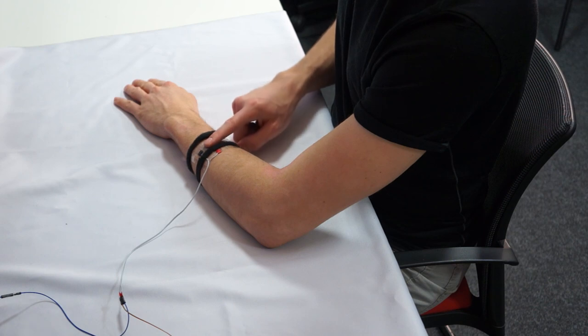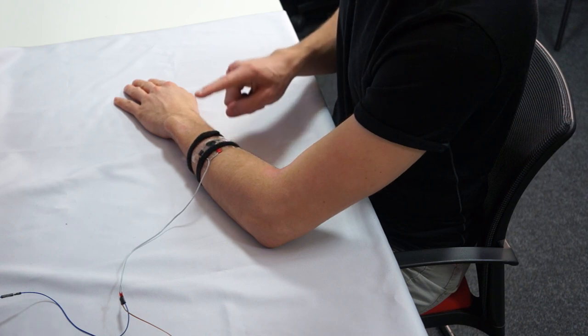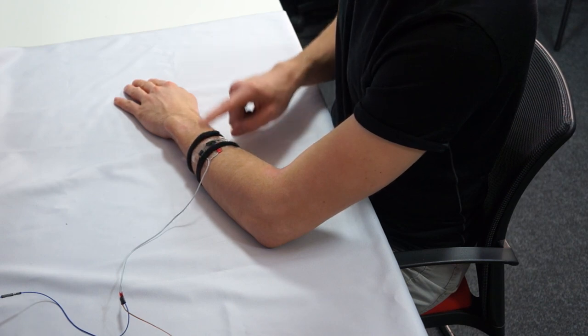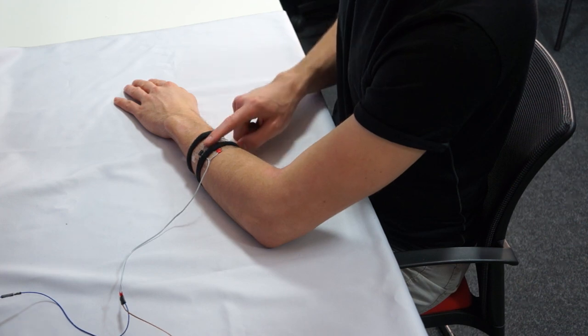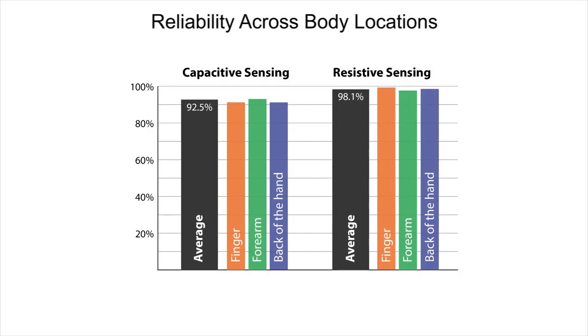In a user study, we investigate the accuracy and robustness of the touch sensor when worn on various body locations. Our findings show a high accuracy of over 92% for light touch contact and over 98% for firm pressure touch. This provides first evidence for suitability of the sensor for practical on-body input tasks.